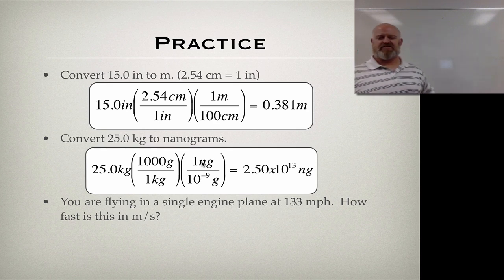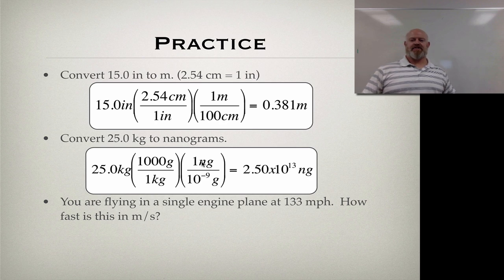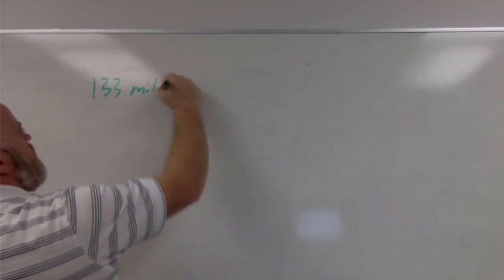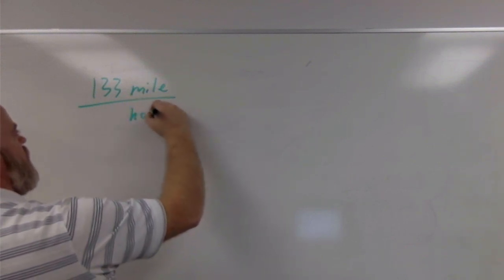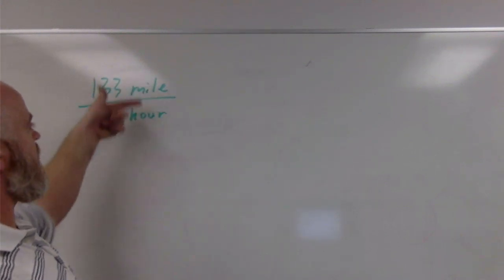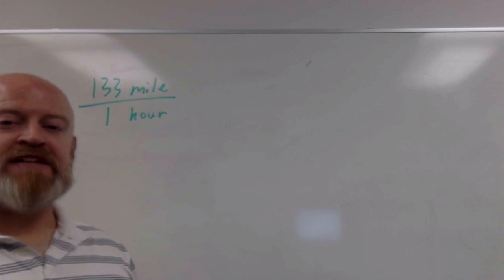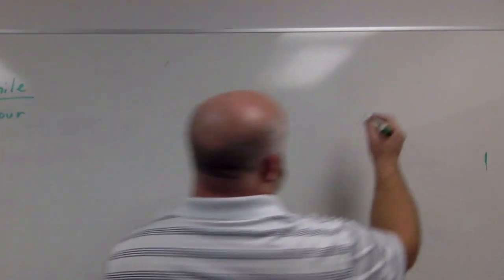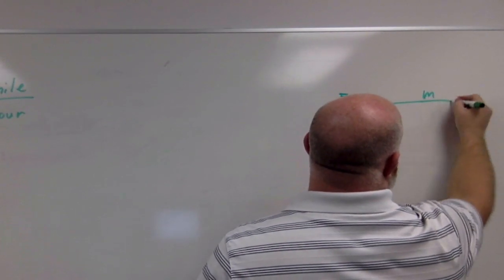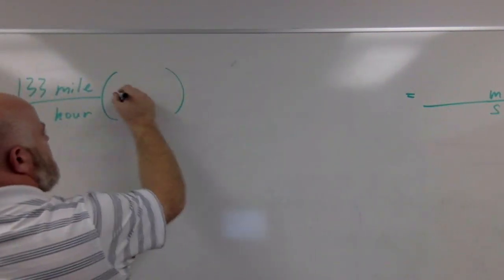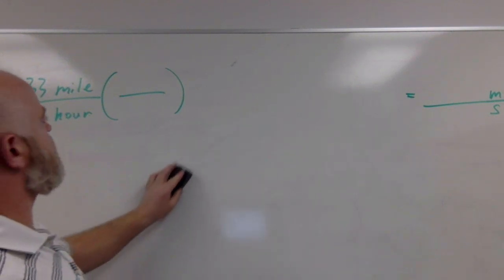Here's another example, one final example we'll do together. This one has an extra layer of complexity to it. We're flying a single-engine plane at 133 mph—miles per hour. So I have 133 miles per hour. How fast is this in meters per second? Now I want an answer in meters per second, so top and bottom again. I'm not really sure about my pathway this time, so I'm going to take it step by step.